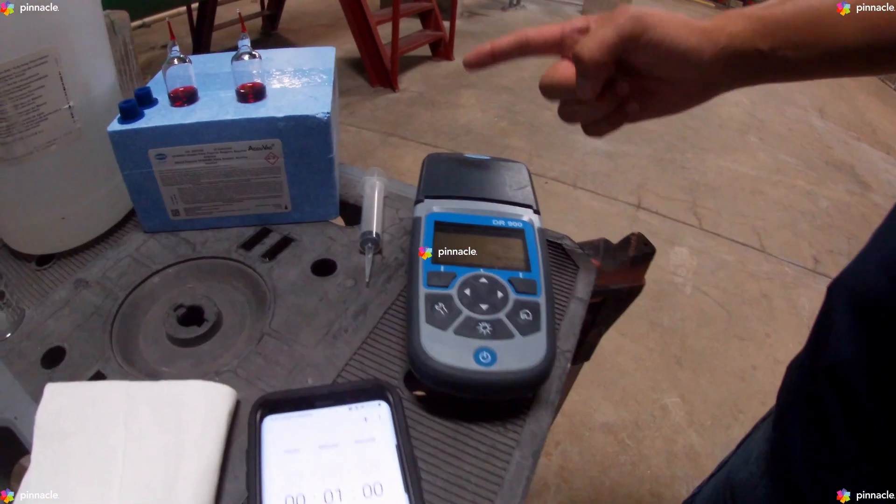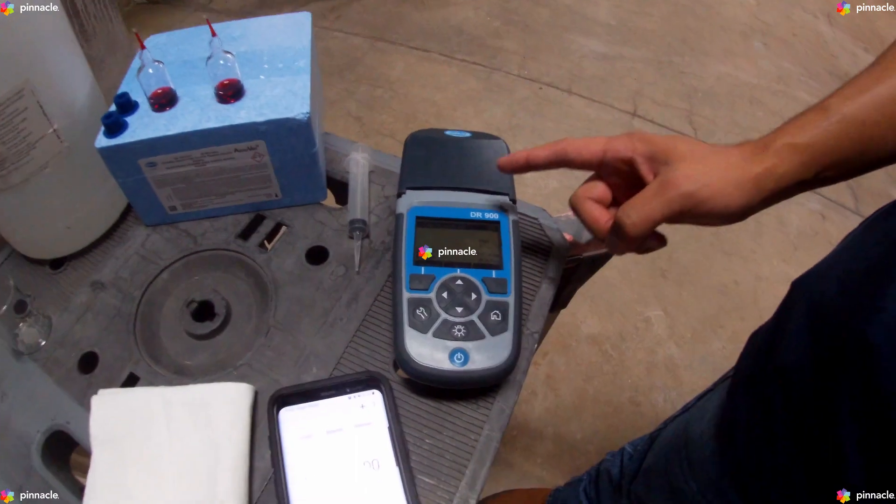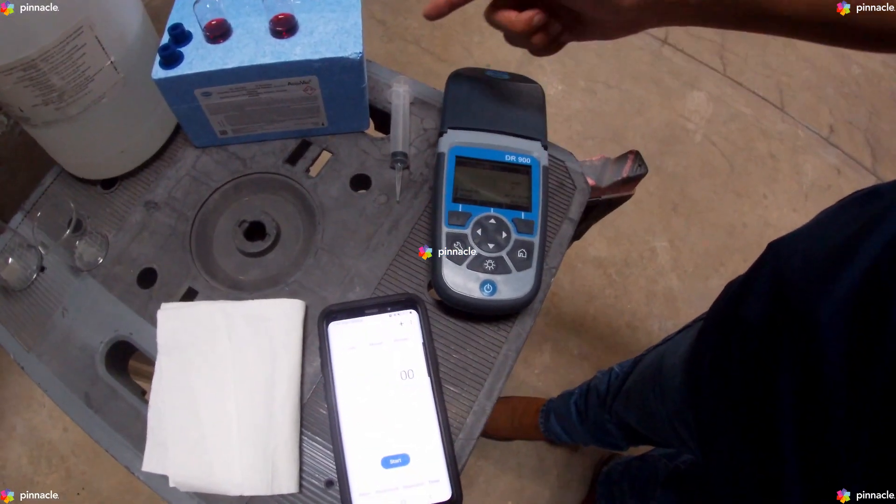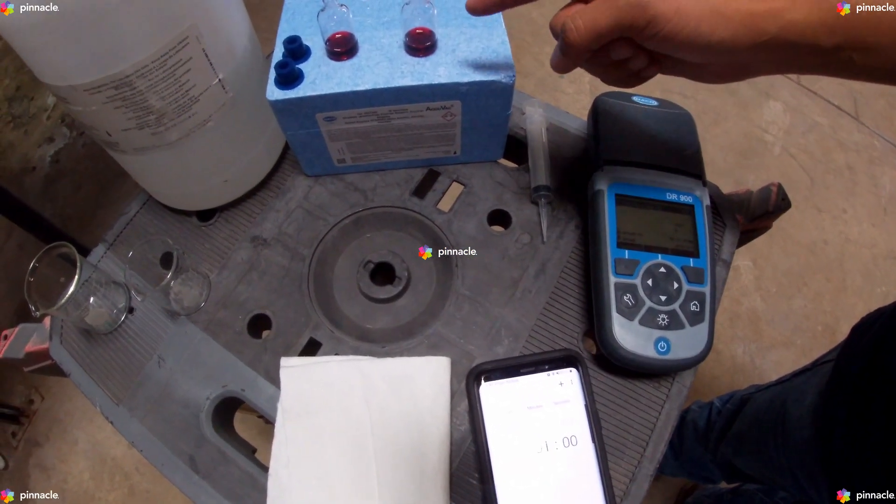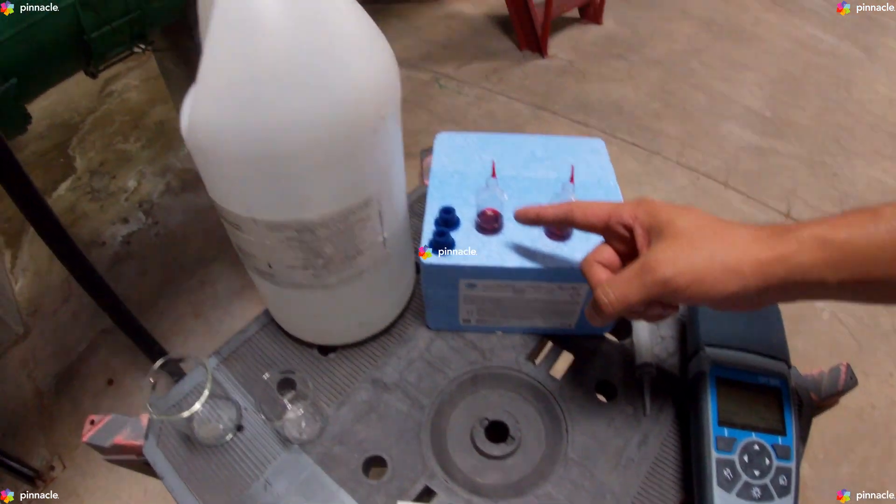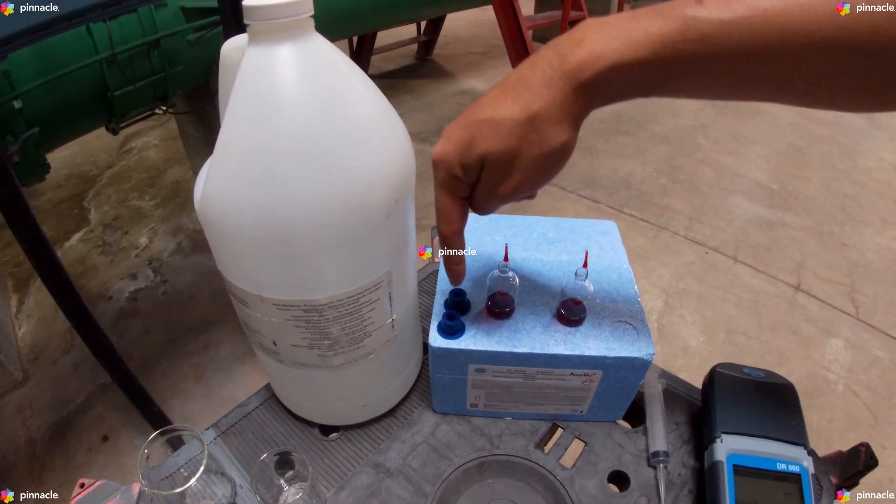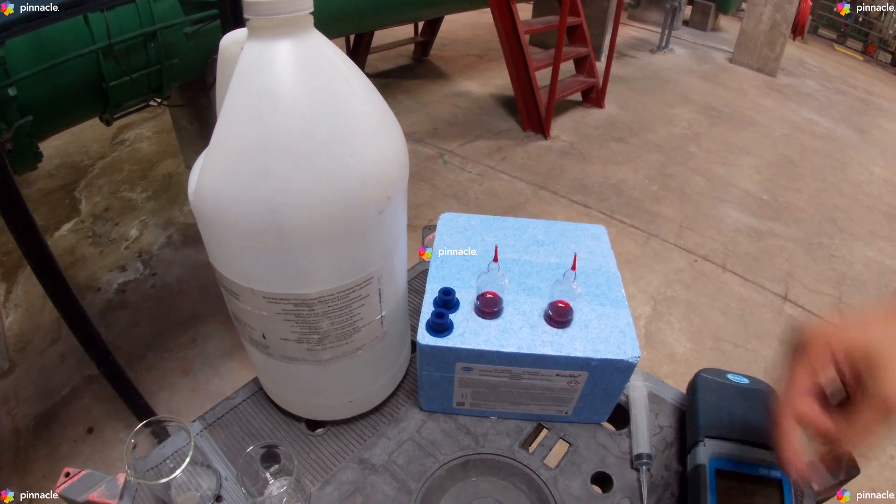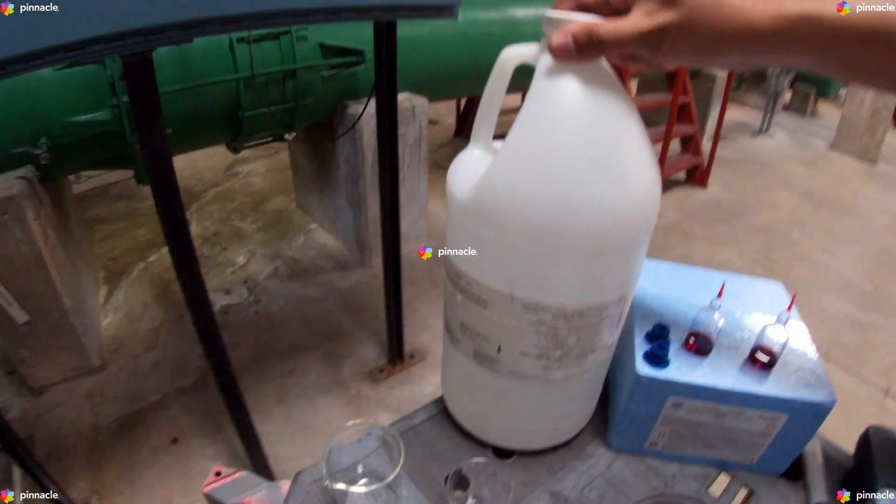For our verification we will be using our DR900 pocket colorimeter, a syringe, two AccuVac ampules, two caps, and RDI water.